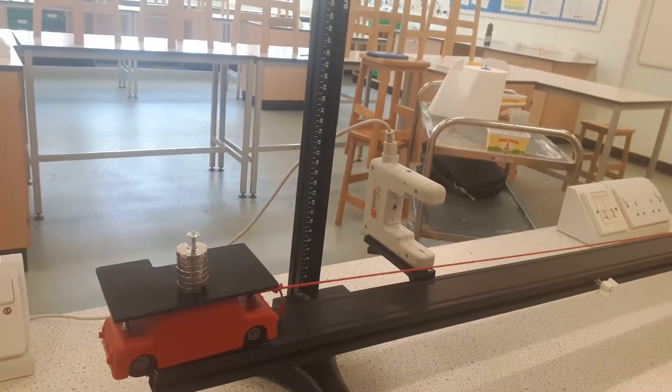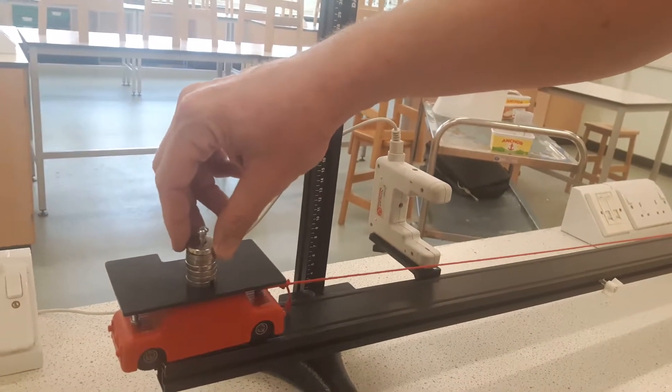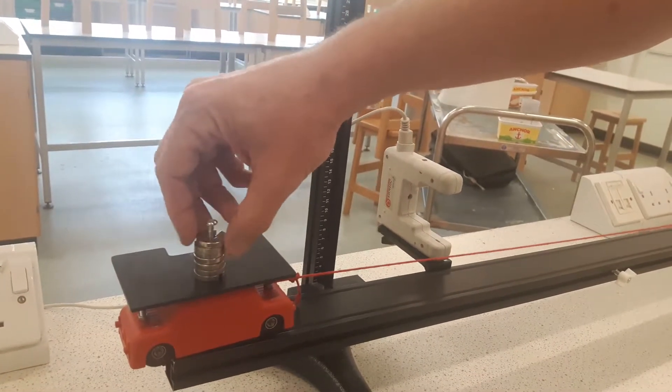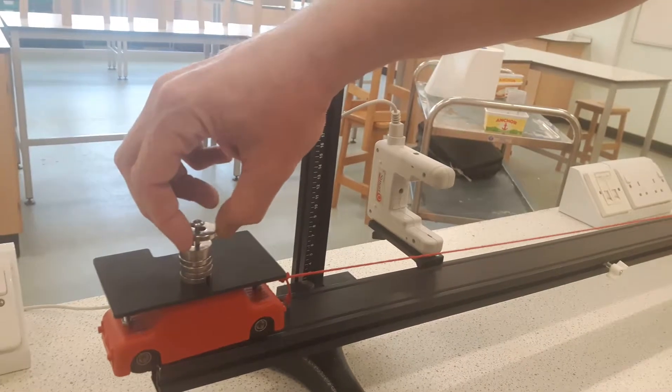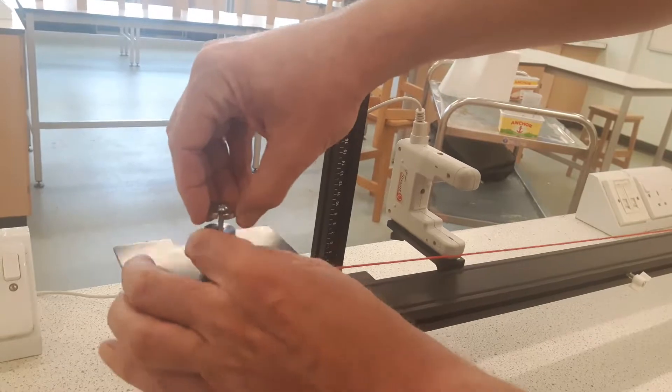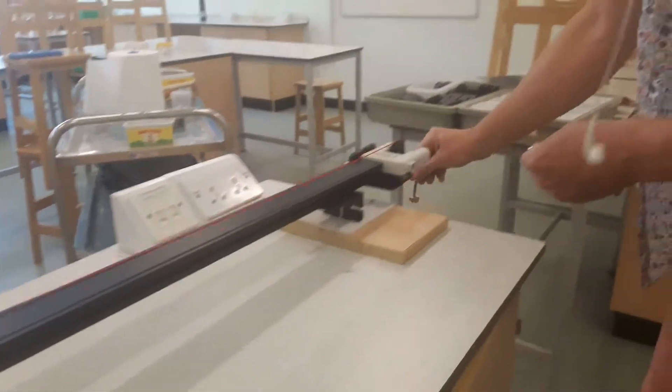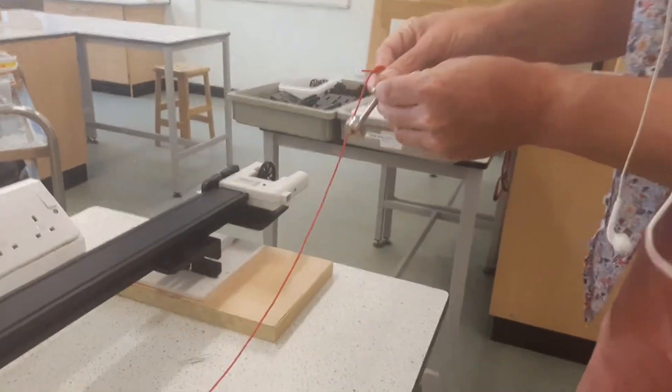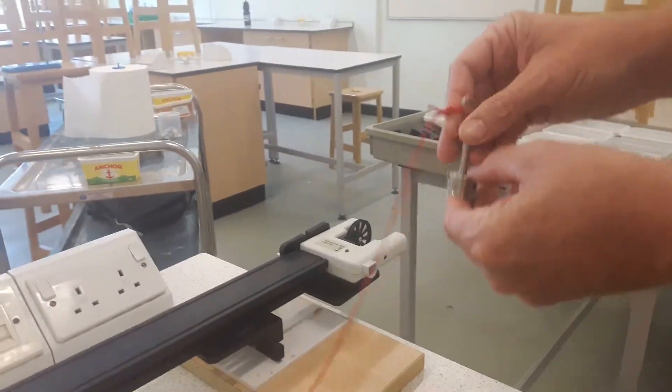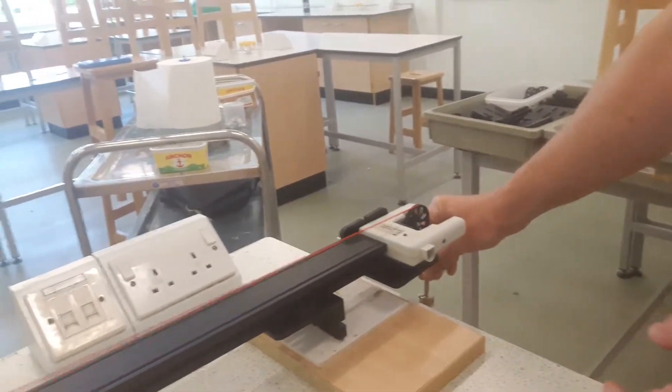After you've taken your one set of results, you then increase the force that's pulling by taking one of the masses from the trolley and placing that onto the mass hanger. So now the mass hanger has got an extra 10 grams of mass, so it's going to be pulling with a greater force.